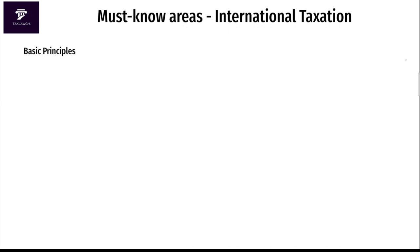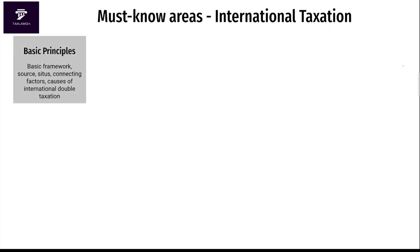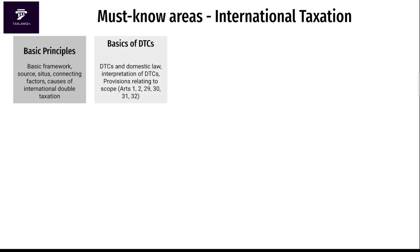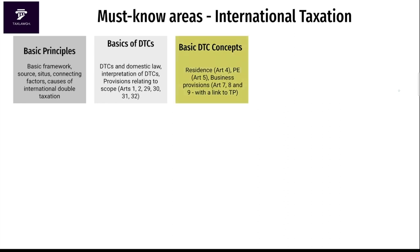So what are the must-know areas? The first is basic principles. Next are the basics of double tax conventions and some articles that are must-use, such as Articles 1, 2, 29, 30, 31, and 32. Then basic double tax convention concepts such as residence and permanent establishments, and provisions relating to business.